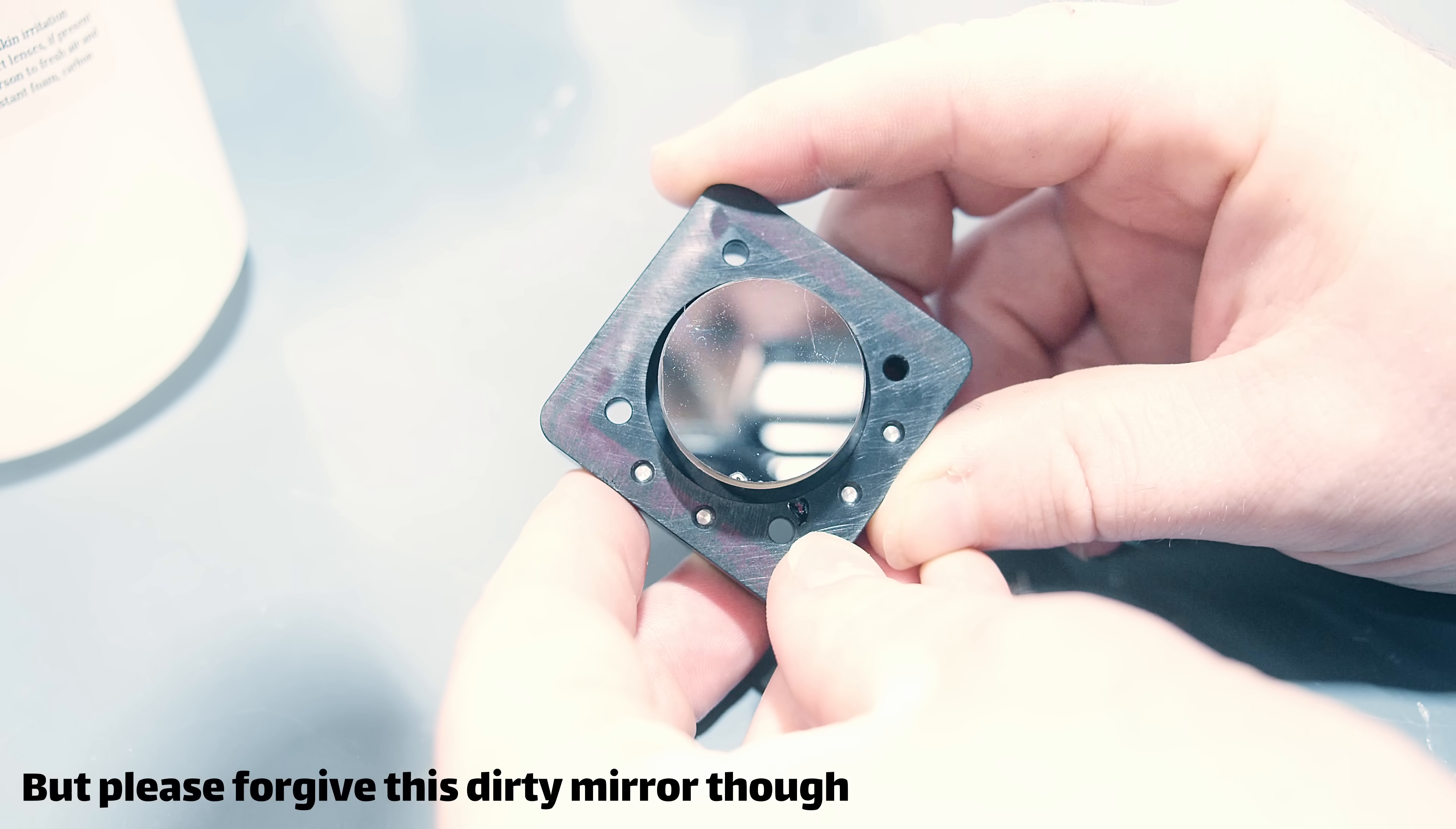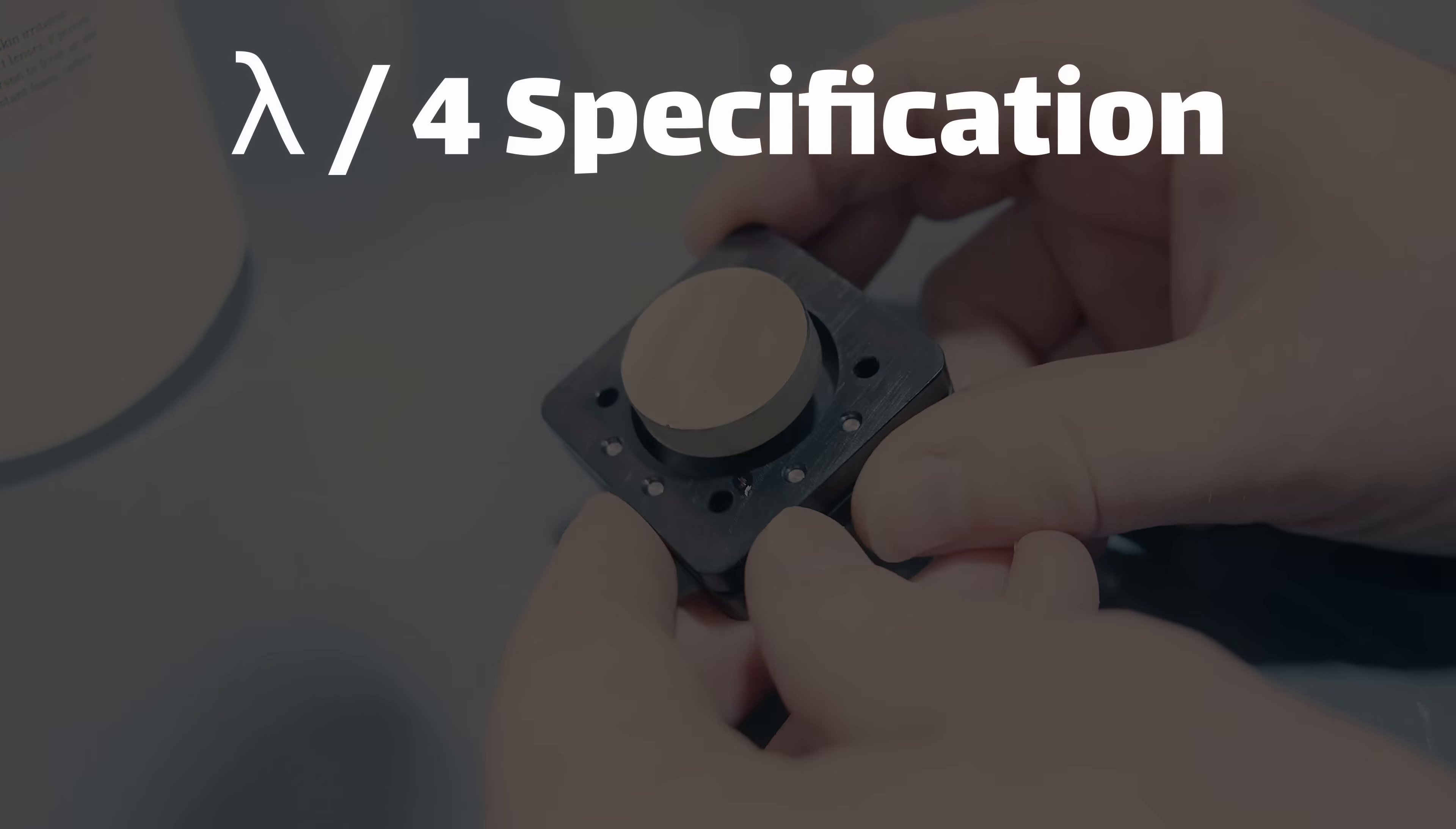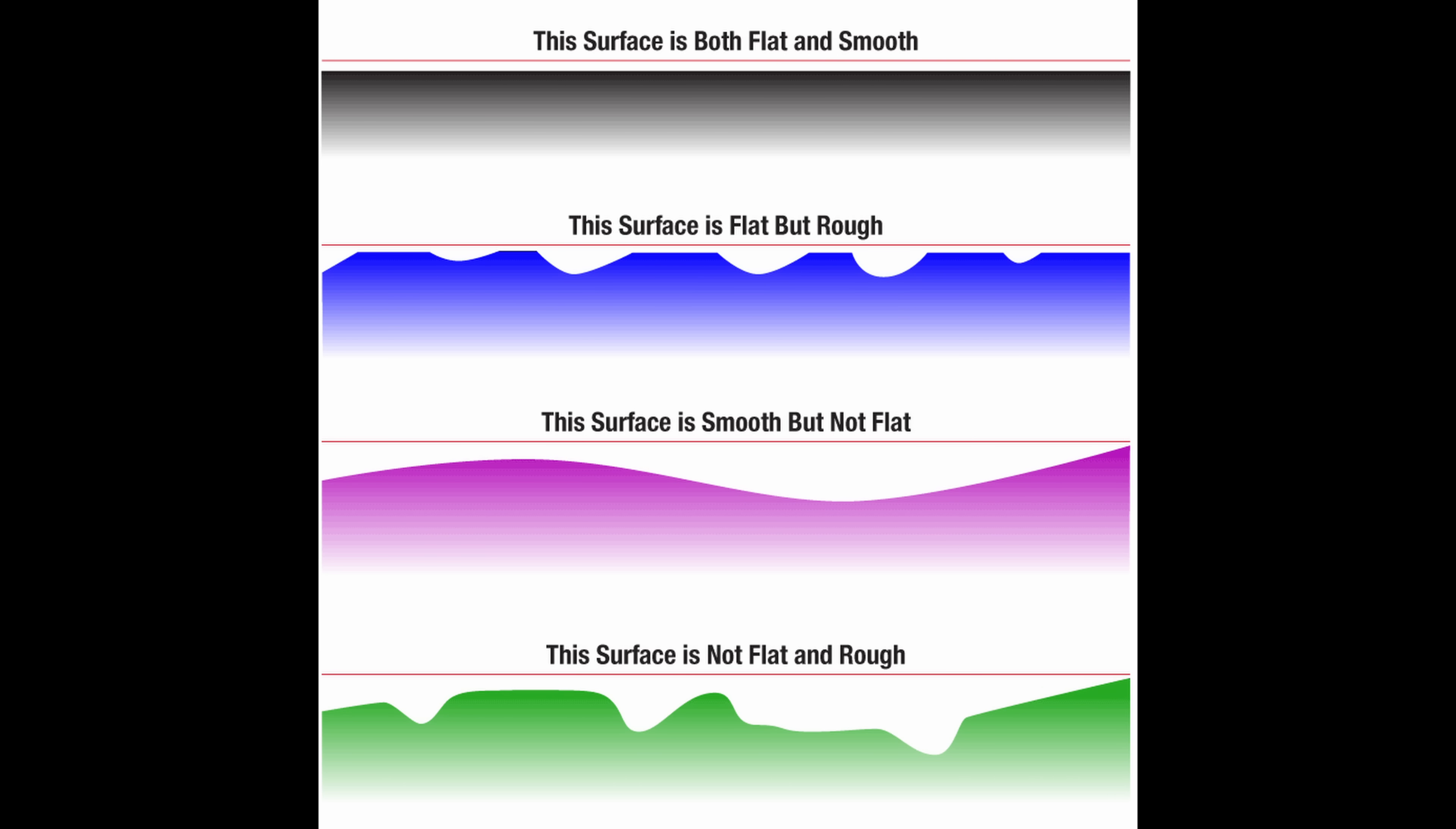Mirror surfaces have tolerances measured in nanometers. For example, a kind of cheap precision mirror will have a lambda over 4 specification. That means the difference between the highest and the lowest point on the mirror is only one quarter the target wavelength. So red light, for example, has a wavelength around 620 nanometers. Which means a lambda over 4 mirror has a flatness tolerance of just 155 nanometers. And that's just the flatness. Surface roughness is also very important. And something around 5 nanometers is common on just even cheap commodity optics.